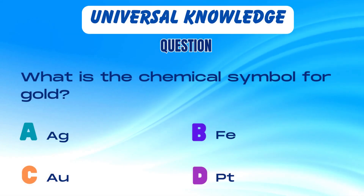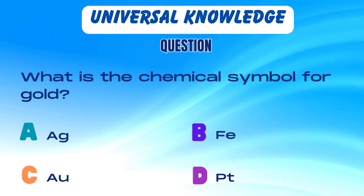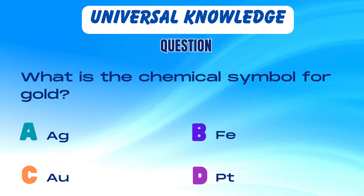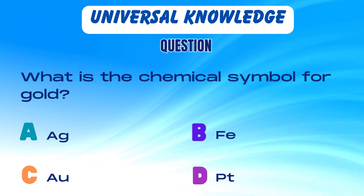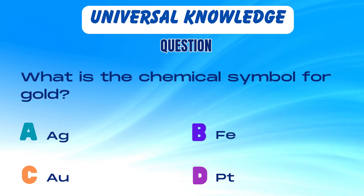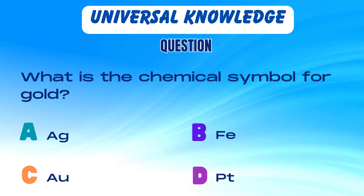What is the chemical symbol for gold? Is it A. AG, B. Fe, C. Au, or D. Pt?